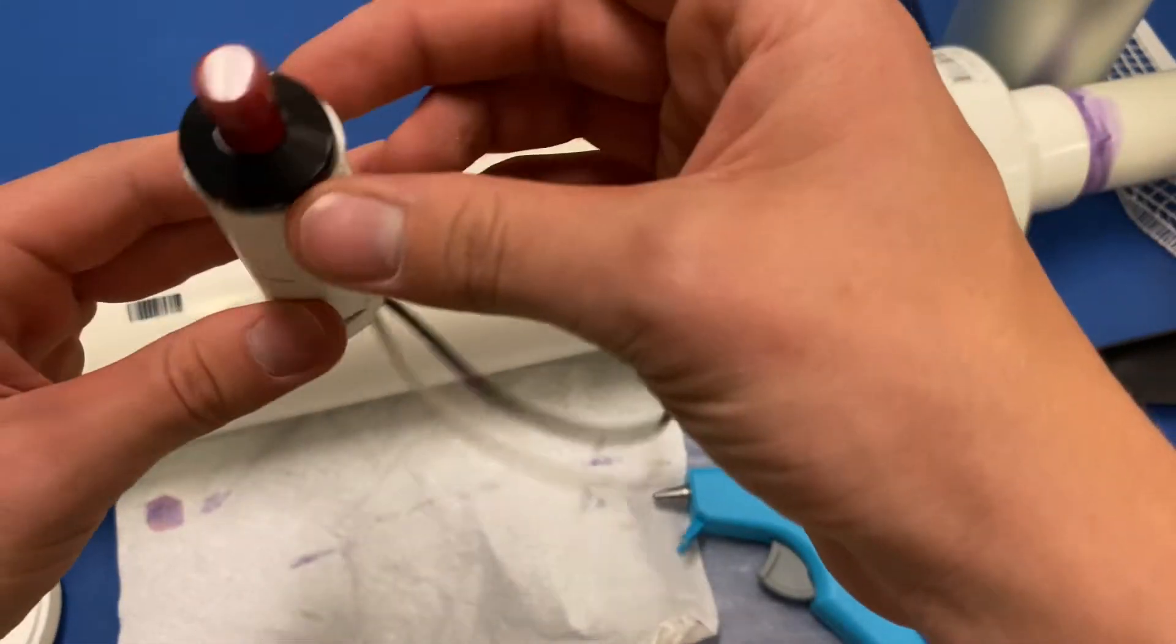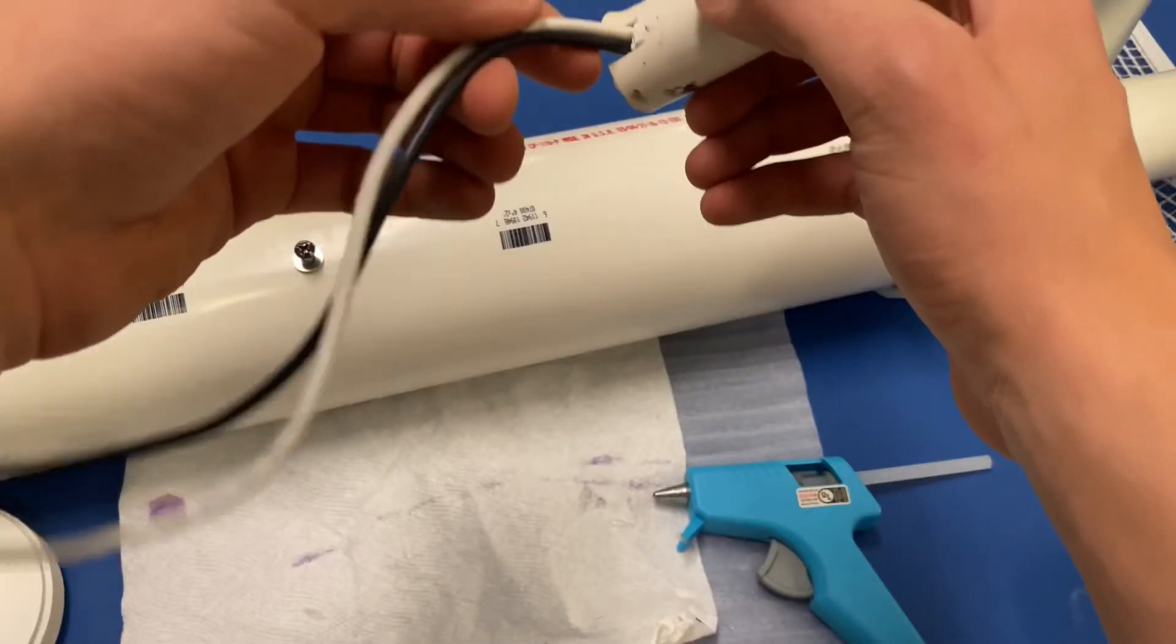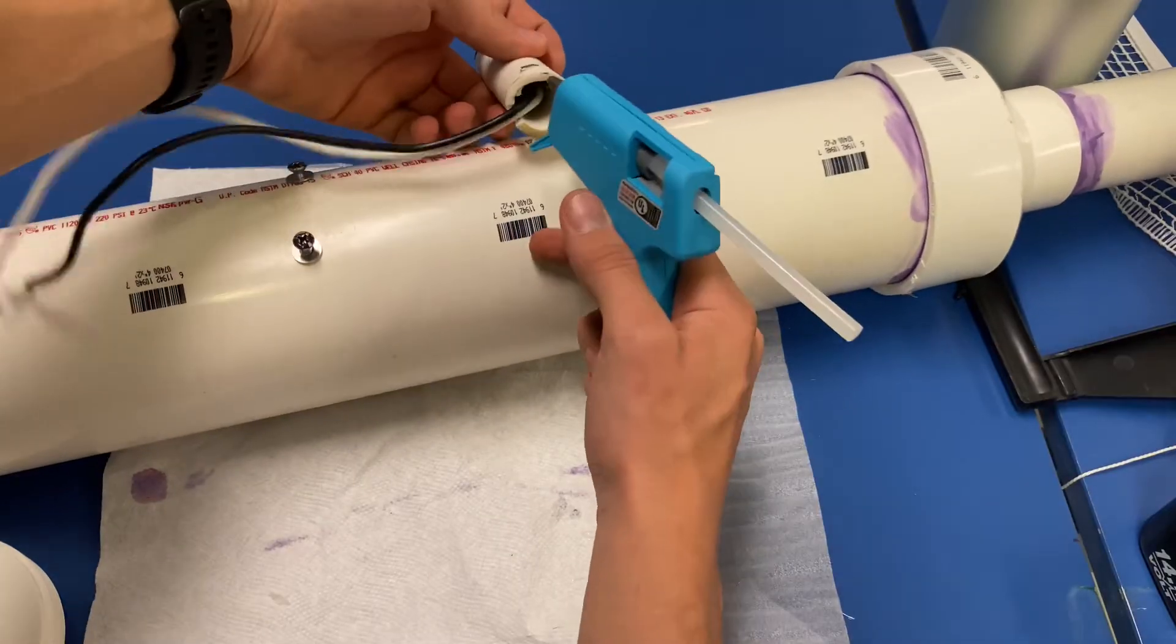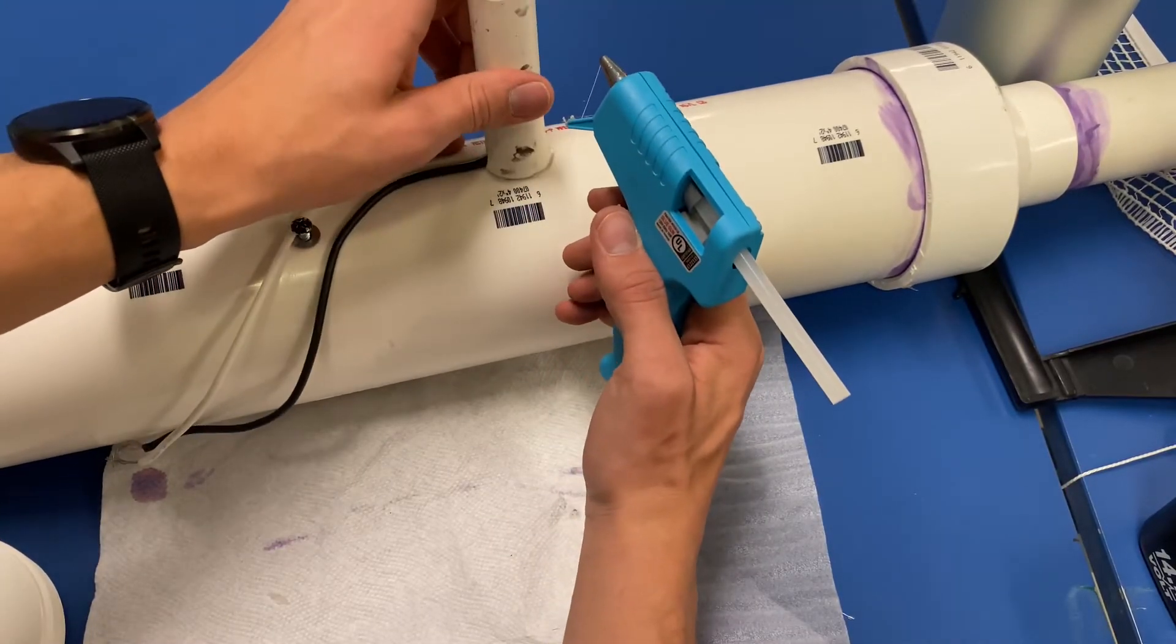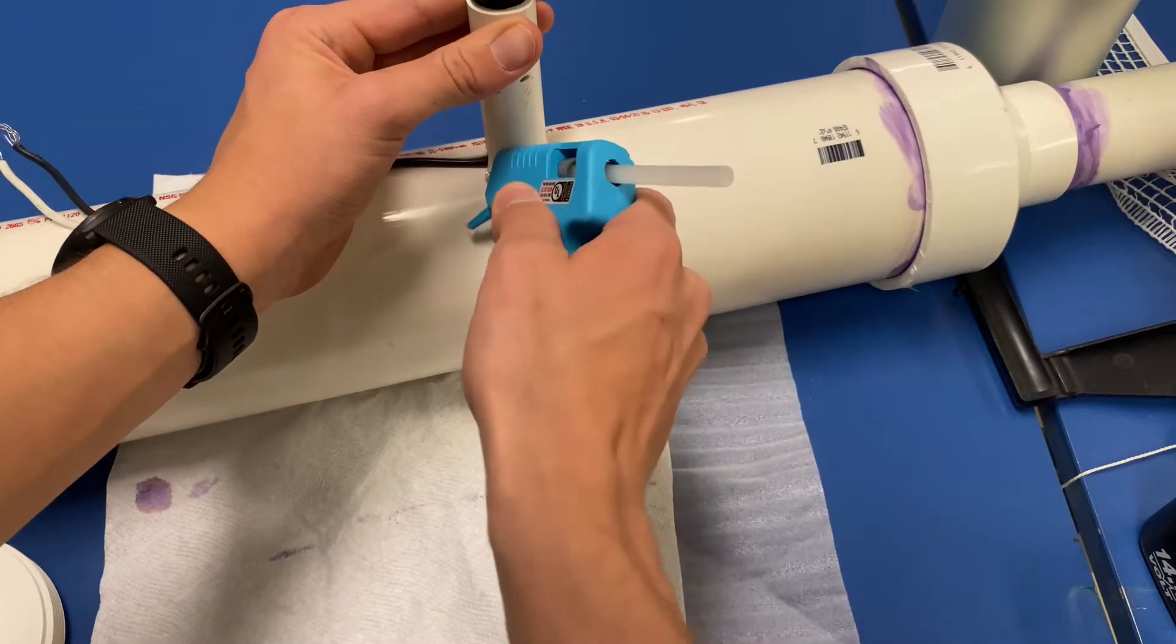Mine's nice and snug in there. It's pretty good. The wires will just go like this. Go ahead and glue on your pipe. Gonna add some around the edge.